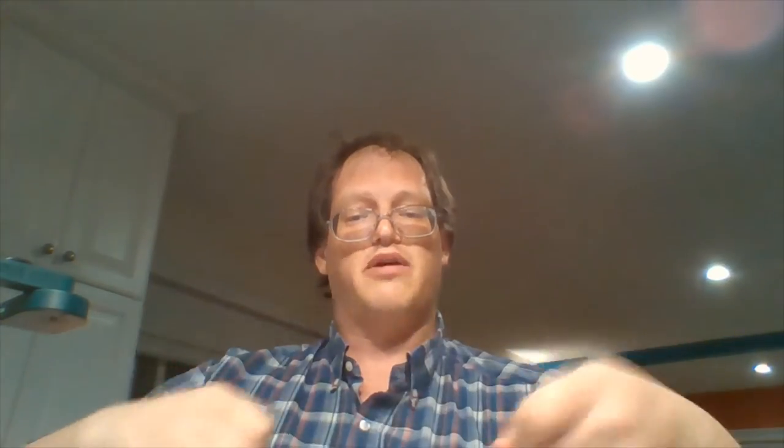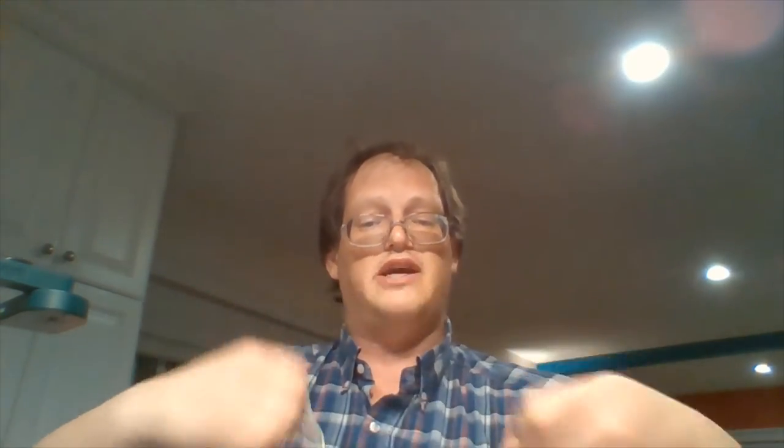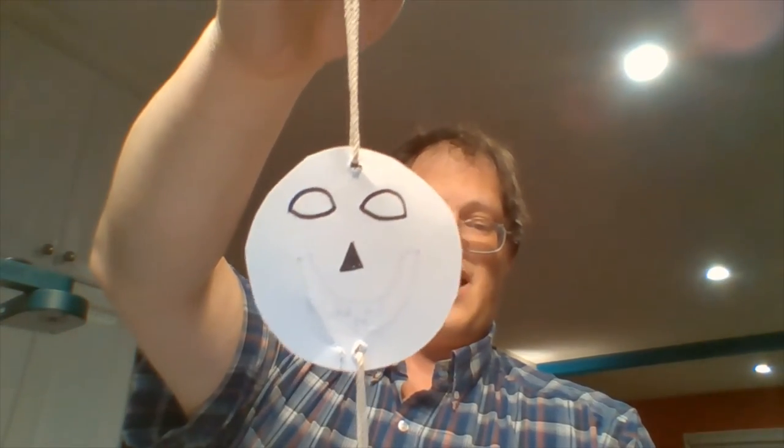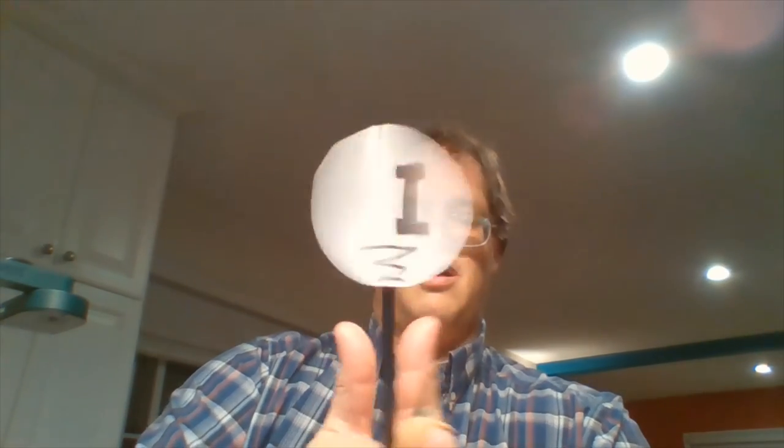Thaumatropes are related to the color wheels that we made previously because the same phenomenon is at work in both cases. The persistence of vision means that either you see the two images simultaneously or that you see the two colors simultaneously, and when you release them and spin them you get the effect of the two combined images. In my case, a pair of eyes and a nose on one side and a mouth on the other, or my letters.